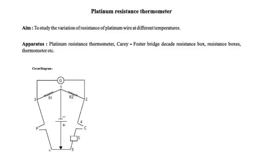This is the circuit diagram of this platinum resistance thermometer. Here, two known resistance boxes are connected: R1 and R2 are variable resistance boxes. P is the platinum wire that we are going to connect, C is the compensating wire, and S is the Carey Foster bridge resistance. We are also going to supply a small amount of voltage in this bridge, and G is the galvanometer which will show the deflection that we need to nullify.